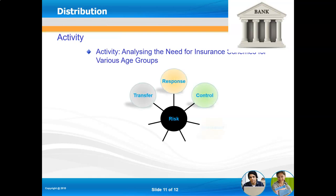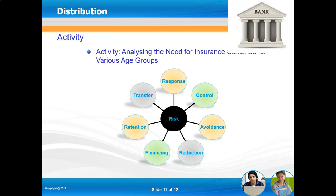Insurance represents a transfer of risk from the insured to the insurer. Key risk management concepts include: transfer, response, control, avoidance, reduction, financing, and retention. For example, if you insure a house or take a loan insurance policy and you pass away, the insurance company repays the outstanding loan, and the family retains the asset.